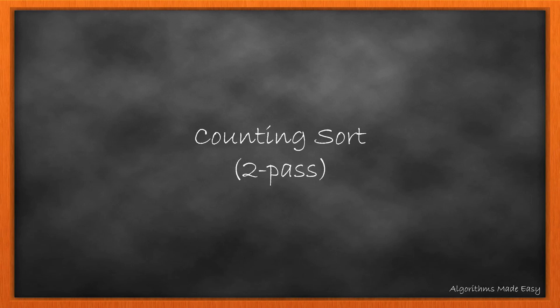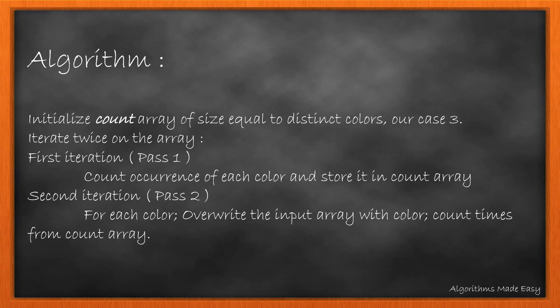Let's start with one of the basic algorithms, counting sort. It is a two-pass algorithm as we will be iterating over the array twice. We will initialize a count array of size equivalent to the total unique colors, in our case 3.